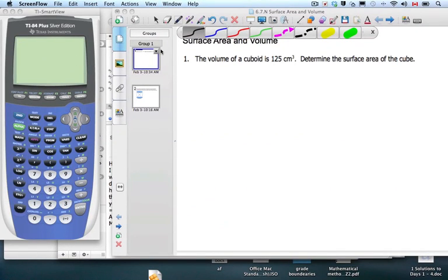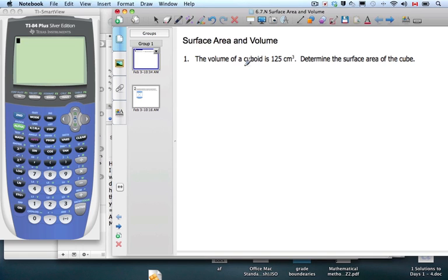Hi there. It's Mrs. Flynn and Mr. Rops. We're working on volume and surface area. The volume of a cuboid is 125 centimeters cubed. Well, first we have to know what a cuboid is.